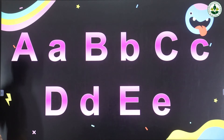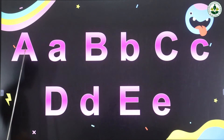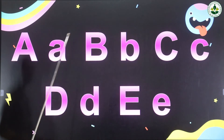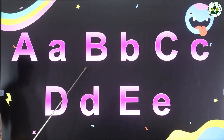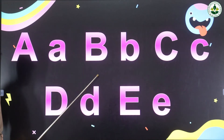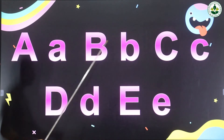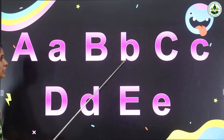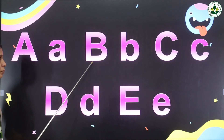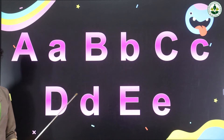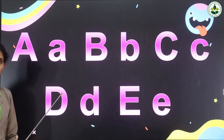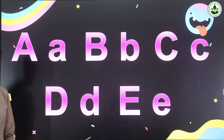Then can you say the phonic sound of letter A? Very good children, it is A. What is the phonic sound of letter A? Then which letter comes after letter A? Yes, it is letter B. Letter B has capital B and small letter B. Once again, letter B has capital B and small letter B. This is capital B and this is small letter B.